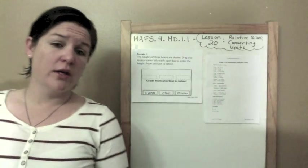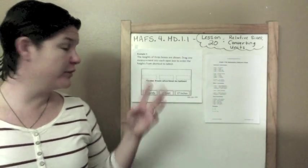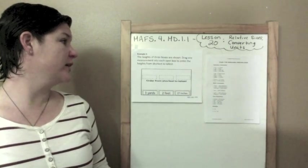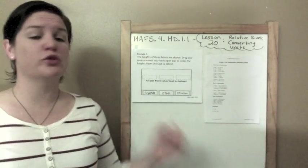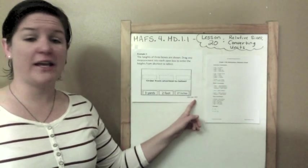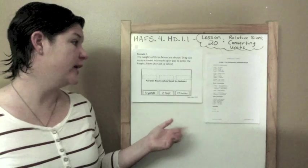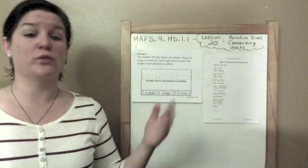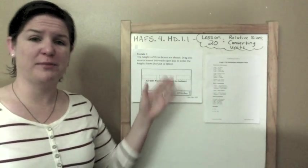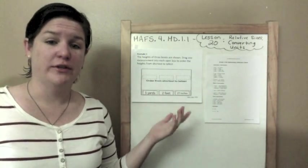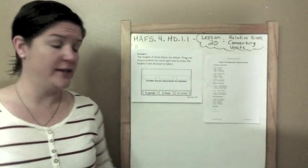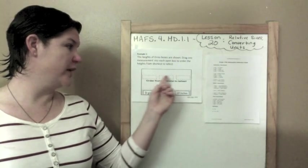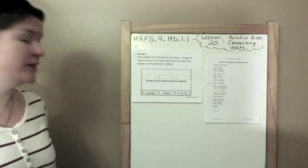We are now on example 2. The heights of 3 boxes are shown. Drag one measurement into each open box in order to order the heights from shortest to tallest. Alright, so this is a graphic response item display, a grid item. This is kind of how it would look on a computer screen, because next year the fourth grade test will be on the computer. This year it will be paper based, but I think that you'll see something similar to this. So we're not really going to drag but we are going to write in the boxes going from shortest to tallest.